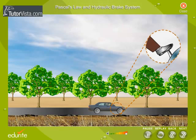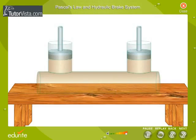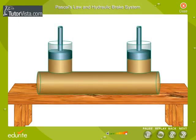The basic idea behind any hydraulic system is very simple: the force applied at one point is transmitted to another point using an incompressible fluid, generally oil. Most brake systems also multiply the force in the process. Here you can see the simplest possible hydraulic system — two pistons fitted into two glass cylinders filled with oil and connected to one another with an oil-filled pipe.